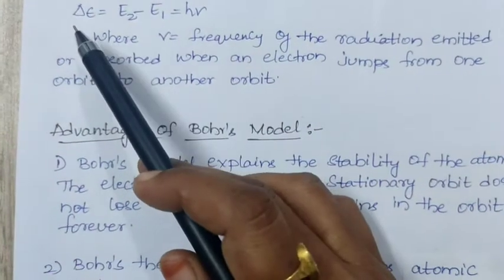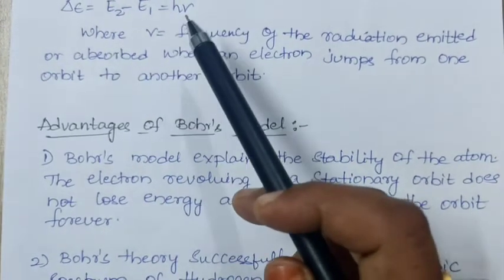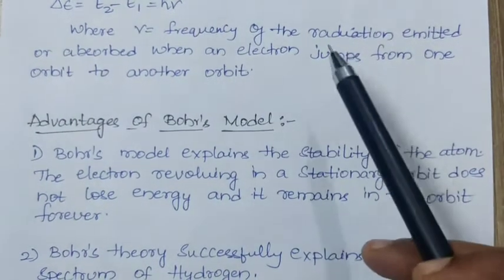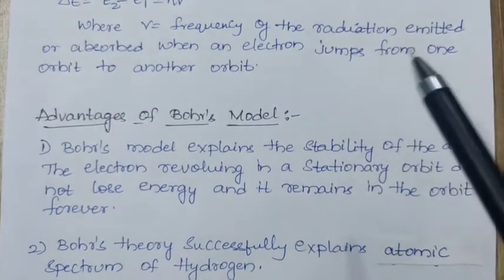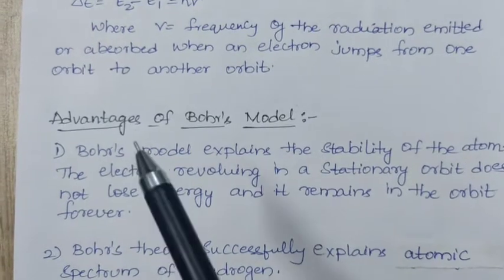Delta E is difference in the energy, E2 minus E1, which is nothing but H nu. Here, H is Planck's constant and nu is frequency of the radiation emitted or absorbed when an electron jumps from one orbit to another orbit.